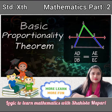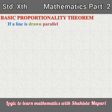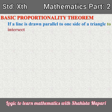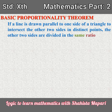Welcome to maths class. Let's learn the basic proportionality theorem. The basic proportionality theorem states that if a line is drawn parallel to one side of a triangle to intersect the other two sides in distinct points, the other two sides are divided in the same ratio.